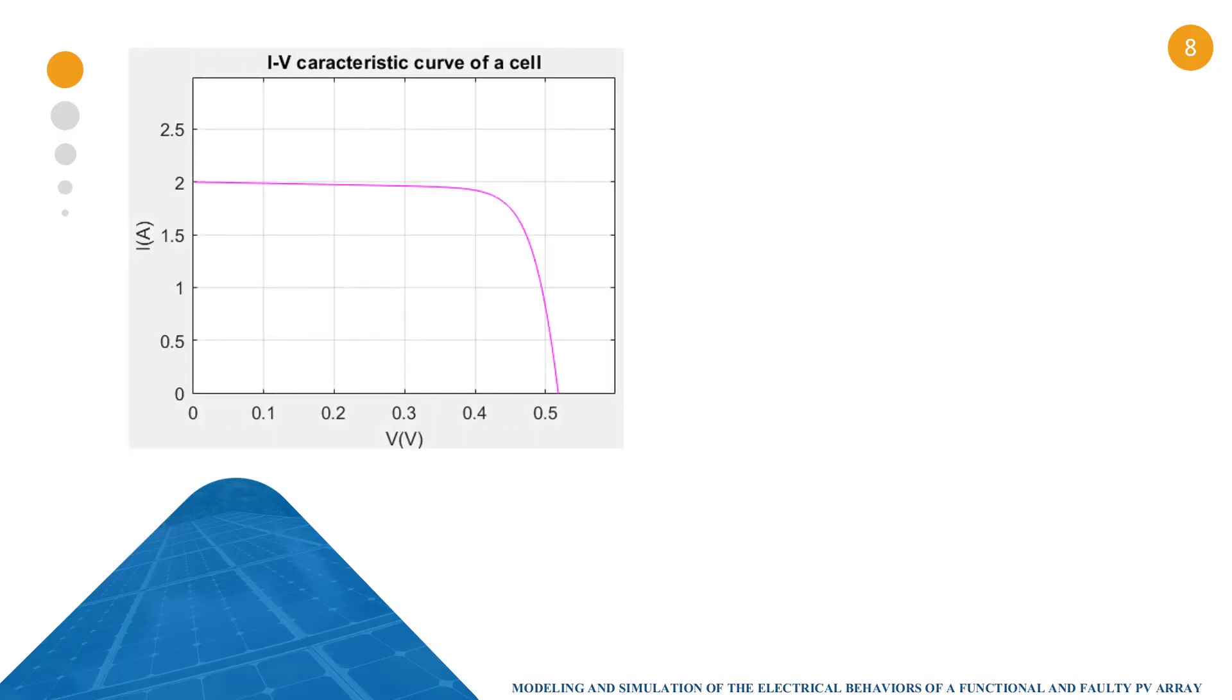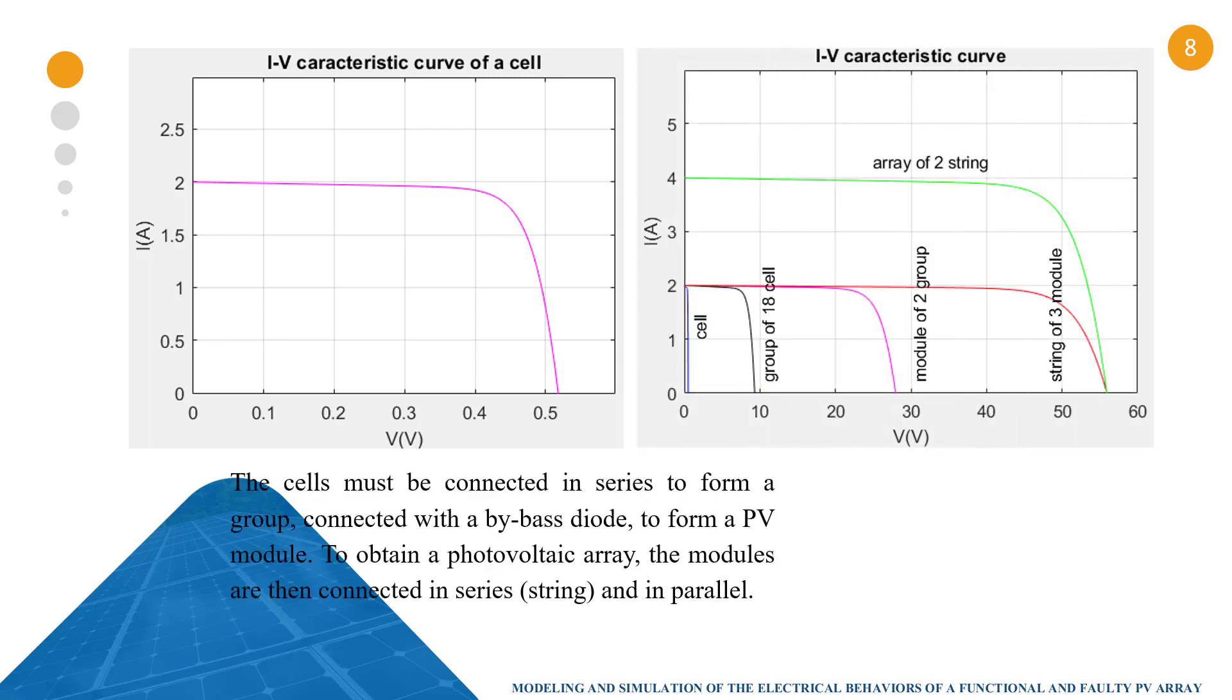The following figure shows the current voltage characteristic curve of a cell's modeling by using the Bishop equivalent circuit. And the second is the characteristic curve of an array of three strings connecting three modules.